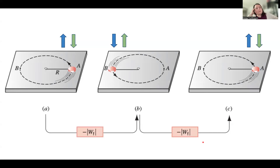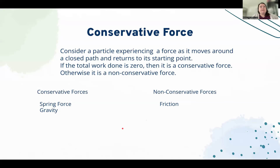This final friction example is different from the previous two. In each case the object ends up back at its starting point, but for spring force and gravity the total work done was zero. For friction, it is not. This gives us the distinction between conservative and non-conservative forces: if the total work done over a closed path is zero, it is a conservative force; otherwise it is non-conservative. We found that spring force and gravity are conservative forces, but friction is not.